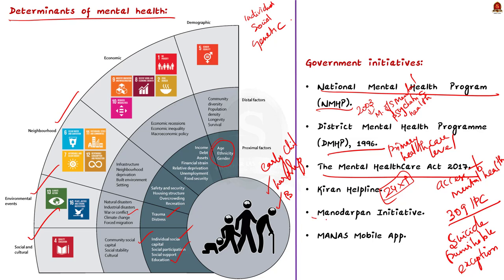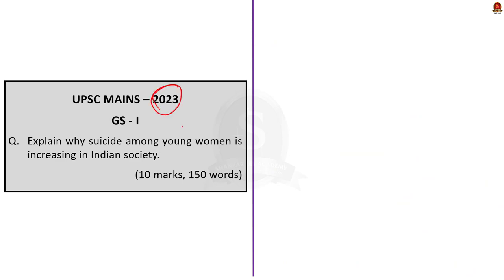There is also the Manodarpan Initiative by the Ministry of Education, aimed to provide psychological support to students, family members and teachers for their mental health and well-being during COVID-19. There is also a mobile app called MANAS — Mental Health and Normalcy Augmentation System — launched by the Government of India in 2021 to promote mental well-being across age groups. MANAS was endorsed as a national programme by the Prime Minister's Science, Technology and Innovation Advisory Council. This year in UPSC GS Paper 1 there was a question related to suicidal deaths among Indian youth, so in future there might be questions related to mental health — that is why we chose this article.